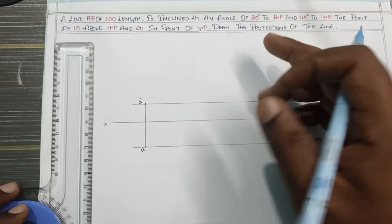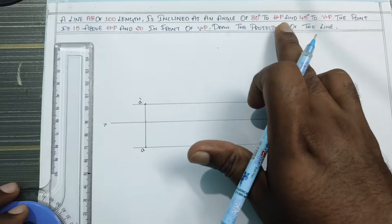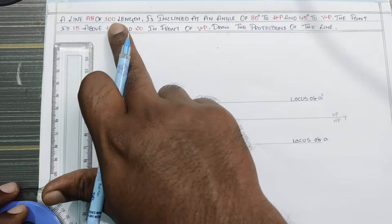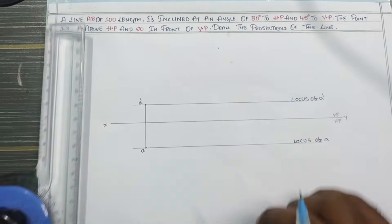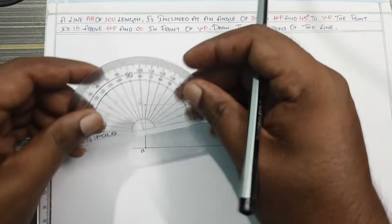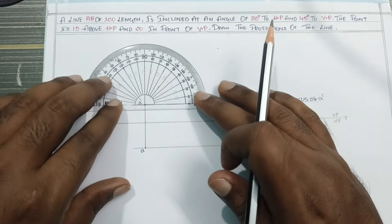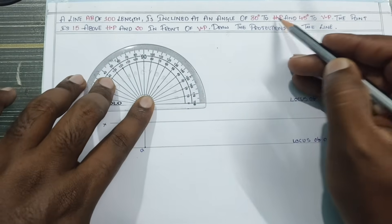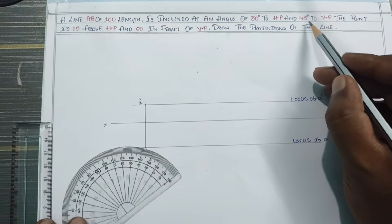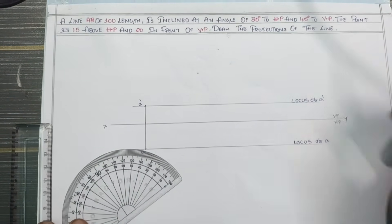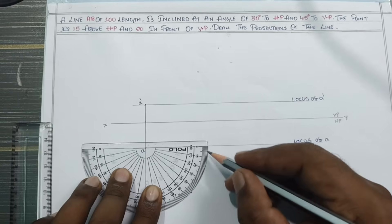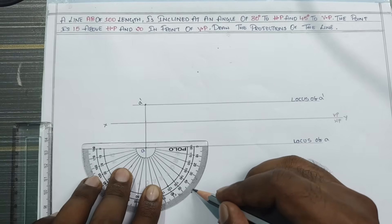30 degrees to HP — just mark it: 0, 10, 20, 30. Next, 45 degrees to VP: 0, 10, 20, 30, 40, 45.